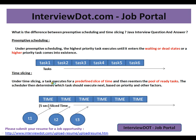Under time slicing, a task executes for a predefined slice of time — say, five seconds in our demo — then re-enters the pool of ready tasks. The scheduler then determines which task should execute next, based on priority and other factors.